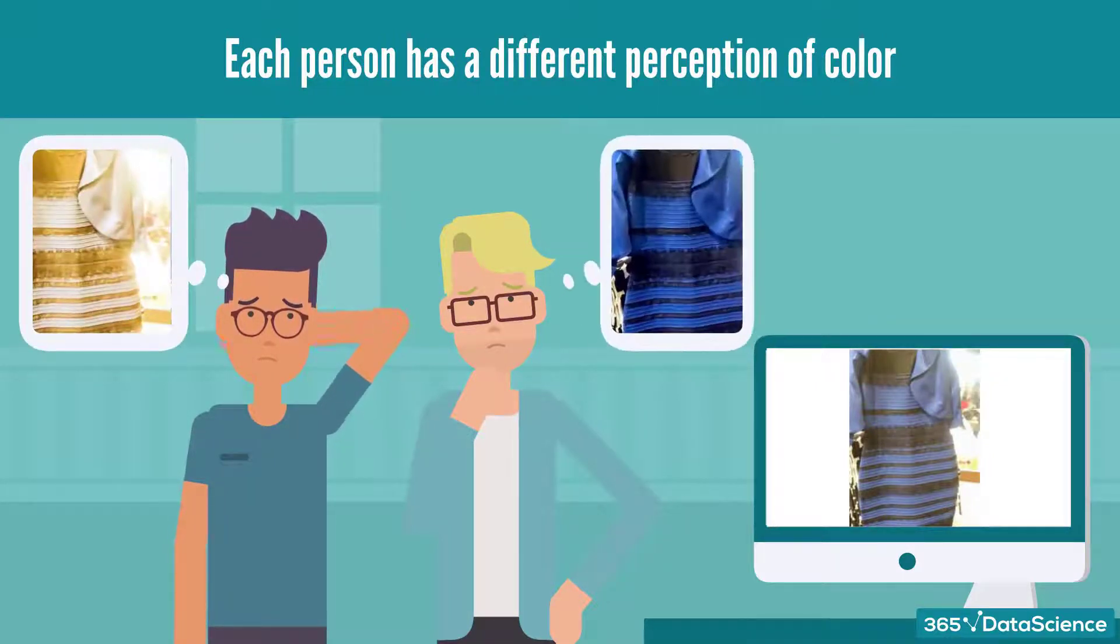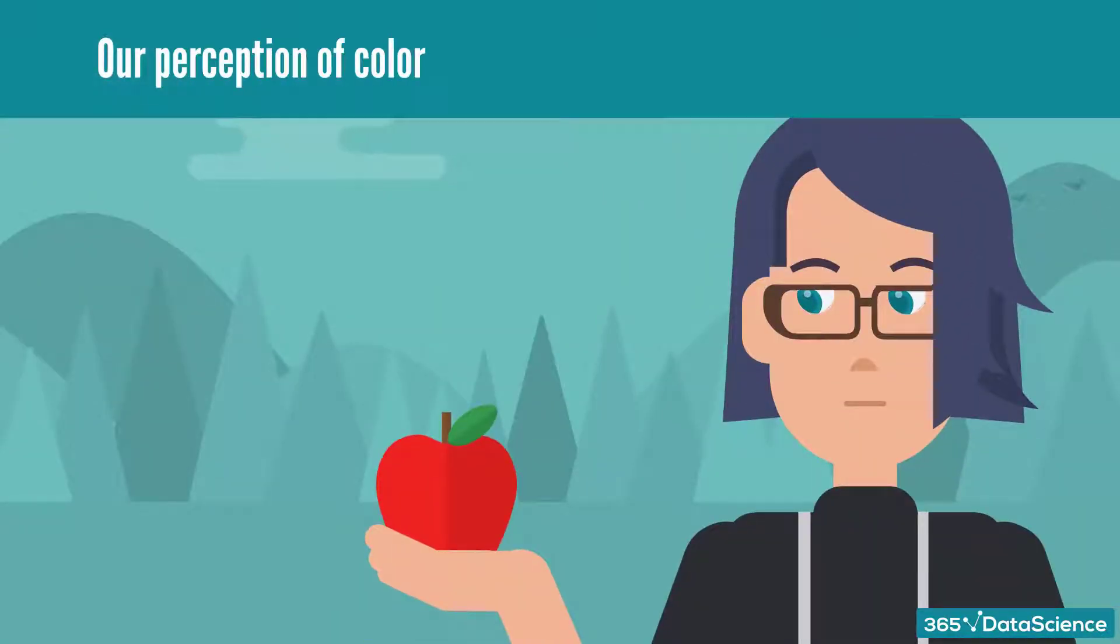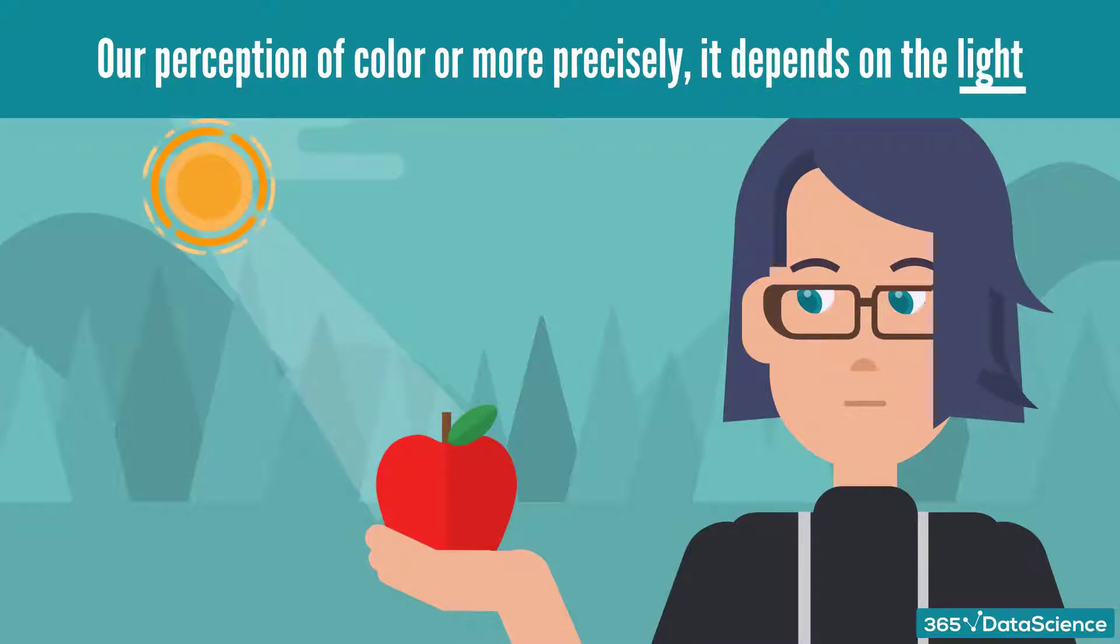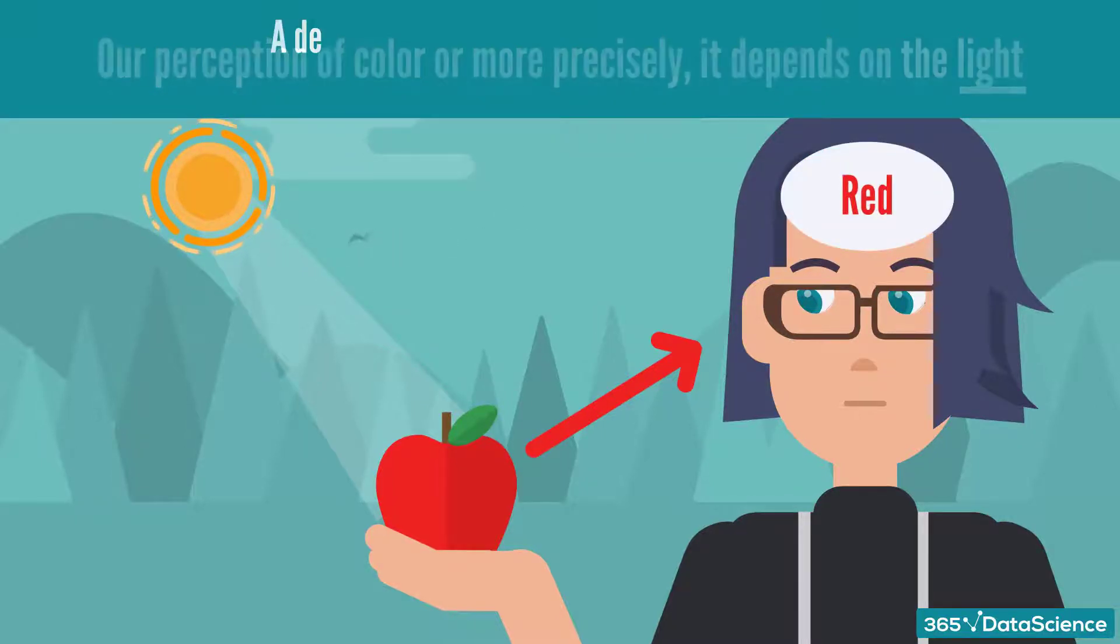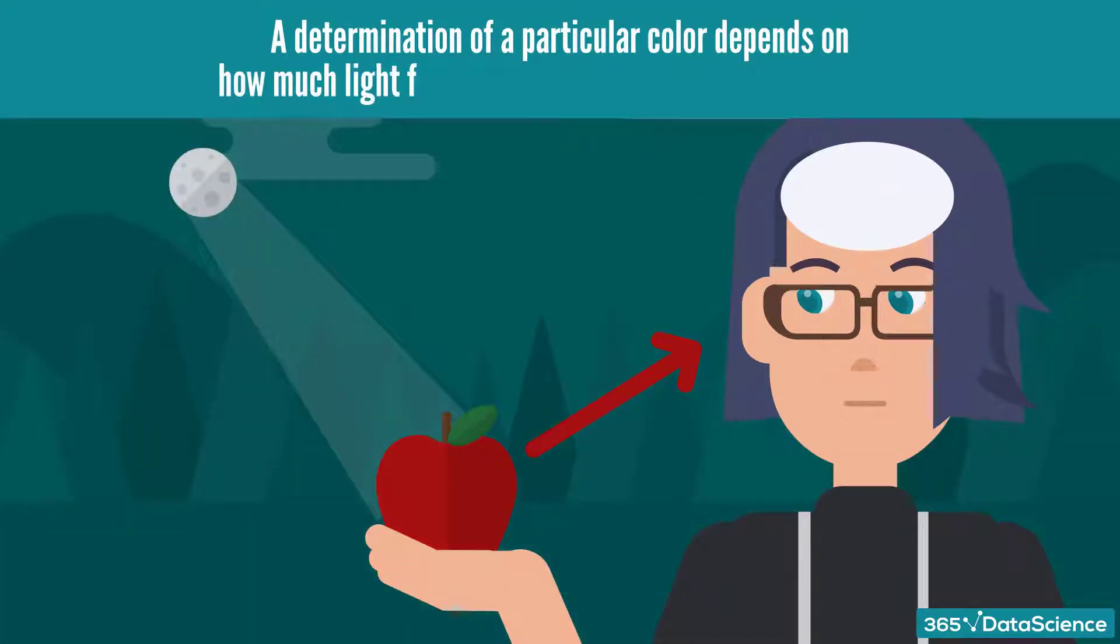You may remember the striped dress from a few years back that had the online community in uproar. Was it white or was it blue? Well, it depends on our perception of color, or more precisely, it depends on the light. Without getting too technical, it's the light reflected from the object's surface that our eyes detect, and it is this light that our brain then translates into color.